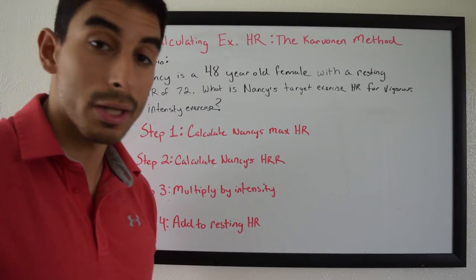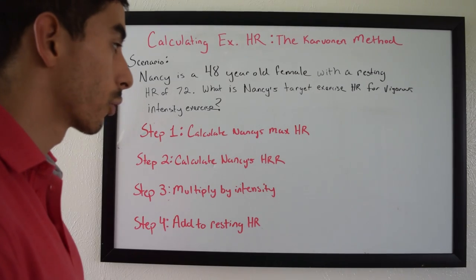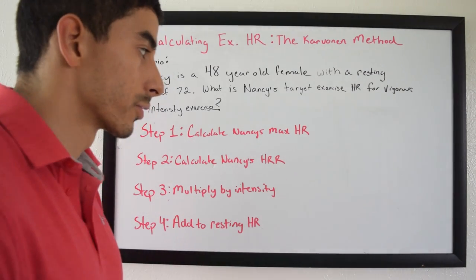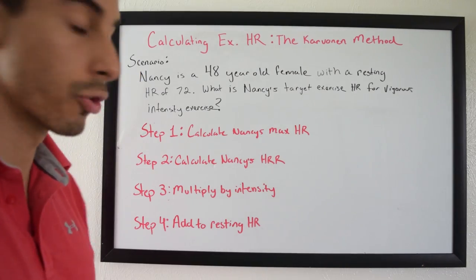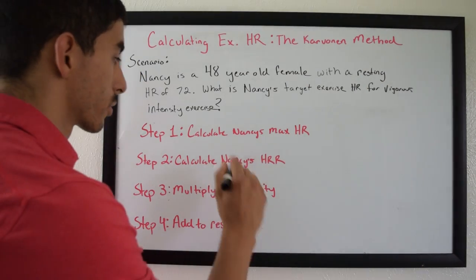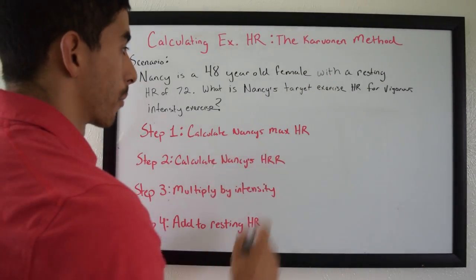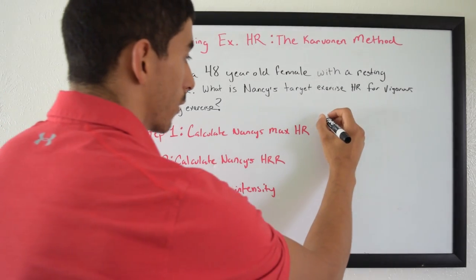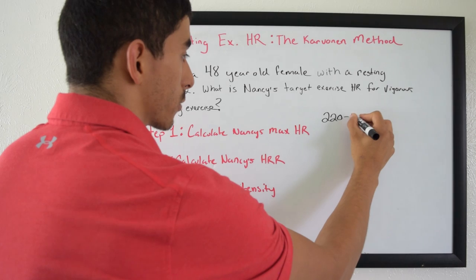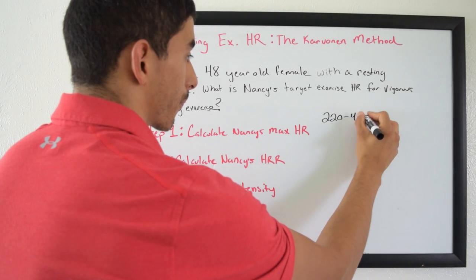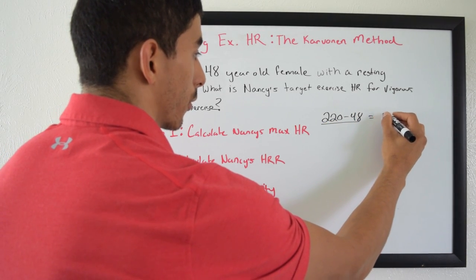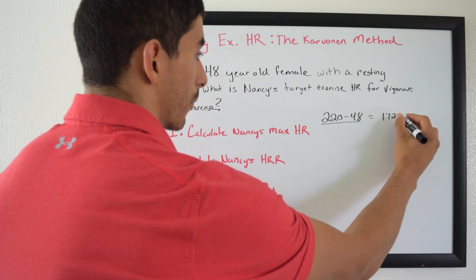This is a four-step process. It's pretty simple but it sounds kind of confusing without seeing it demonstrated visually, so let me show you. The first thing you're going to do — Step 1 — is calculate Nancy's maximum heart rate using the standard equation: 220 minus age. So 220 minus 48 equals 172 beats per minute.